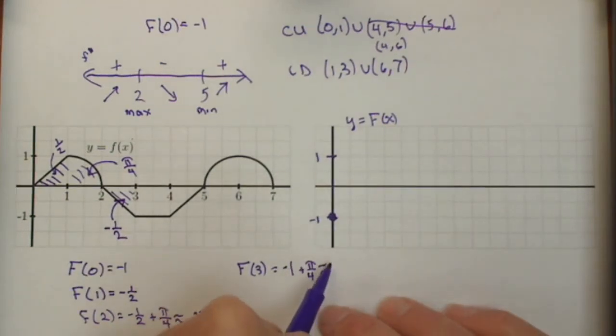Again, for plotting purposes, I'm going to put it as a decimal. So negative 0.2146.